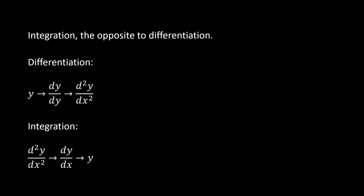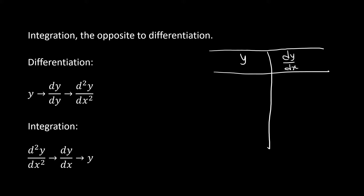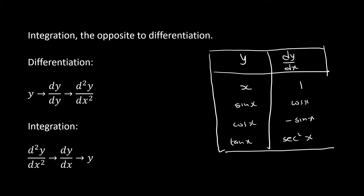Before we get into it, I want to highlight a few important things. Remember integration from Maths N4 — we had a table with y and dy/dx. For example, we had x, sin x and cos x, where the derivative of cos x is negative sin. We had tan and its derivative is sec squared. This is just an example of that table, not the entire thing.